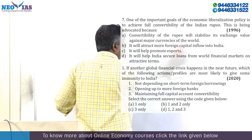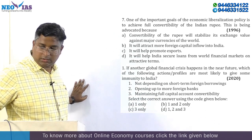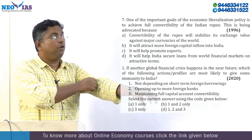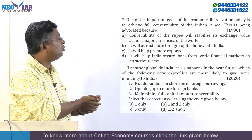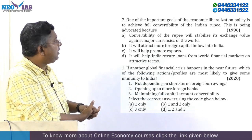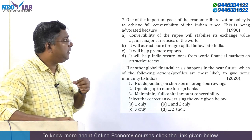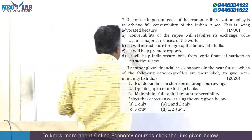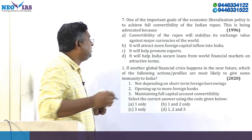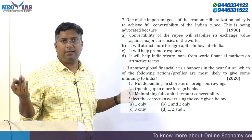One of the important goals of the economic liberalization policy is to achieve full convertibility of the Indian rupee. This has been advocated because convertibility of the rupee will stabilize its exchange value against major currencies — but that is wrong, so A is wrong. The correct reason is that it will attract more foreign capital inflow into India. It promoting exports or securing loans cannot be guaranteed. So the answer is B.